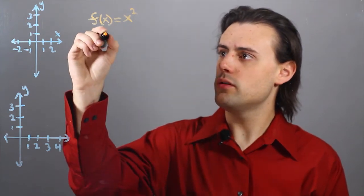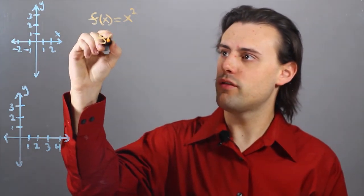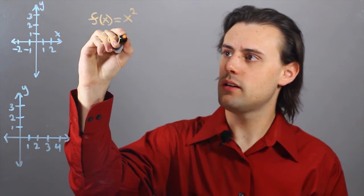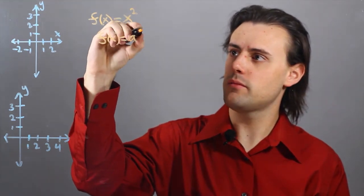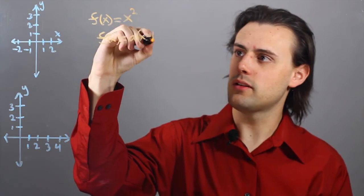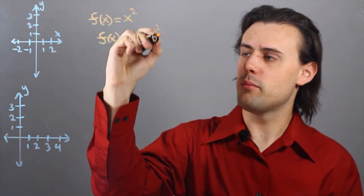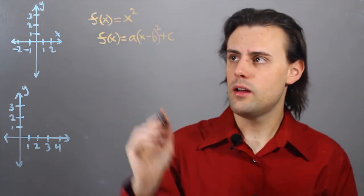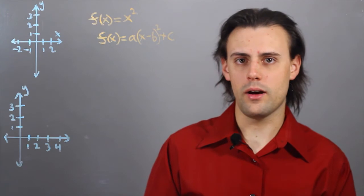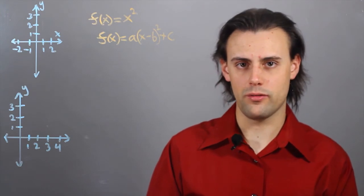The general form of a quadratic function I'll write as a times (x minus b) squared plus c, where a, b, and c are parameters. a represents by how much you stretch your graph in the vertical direction.